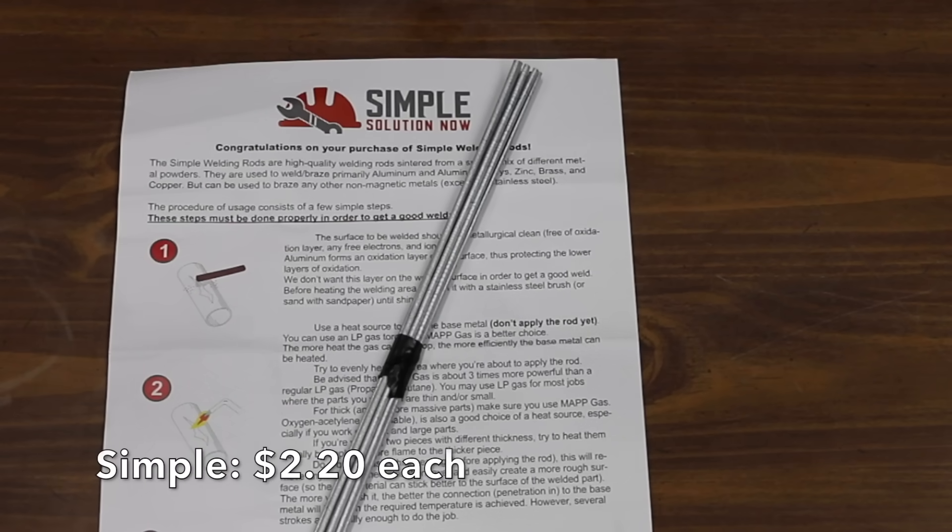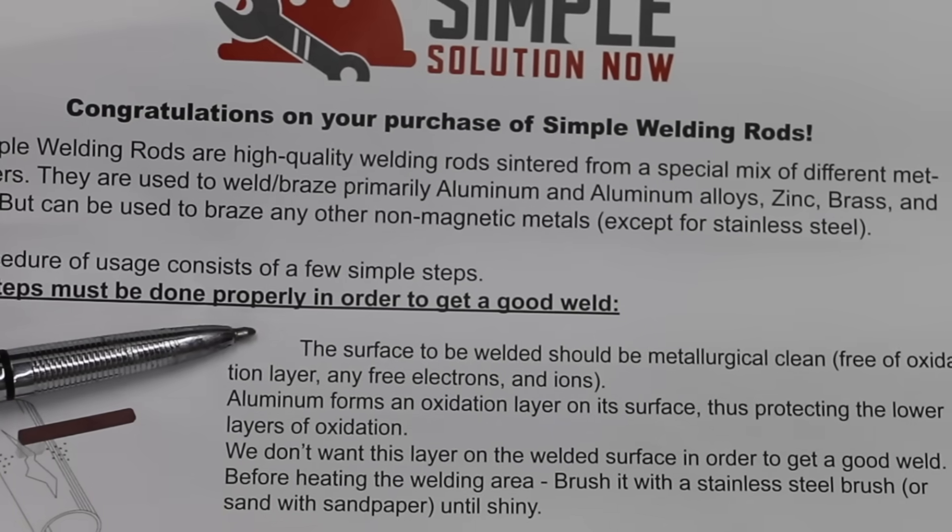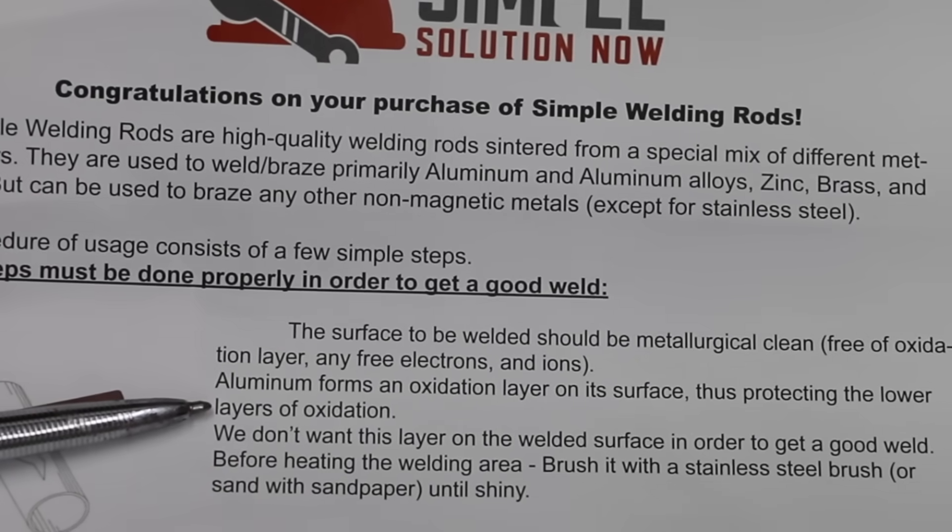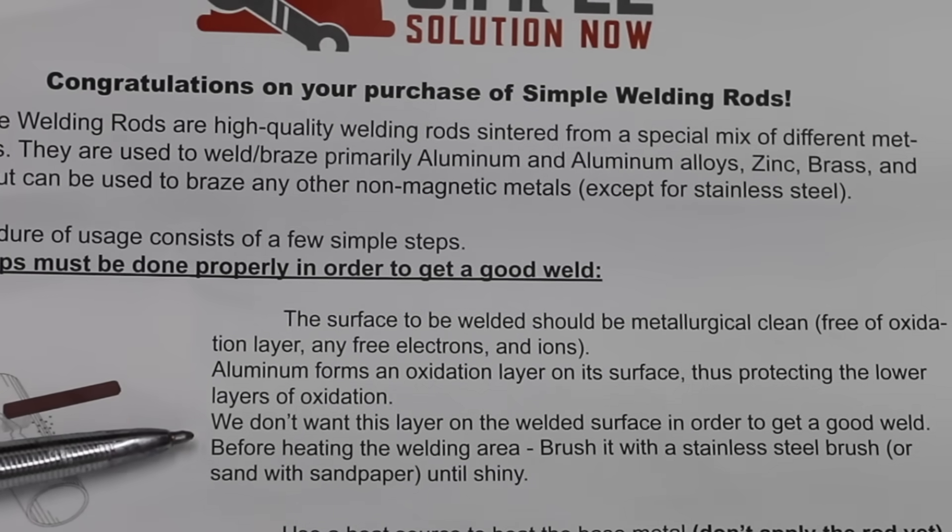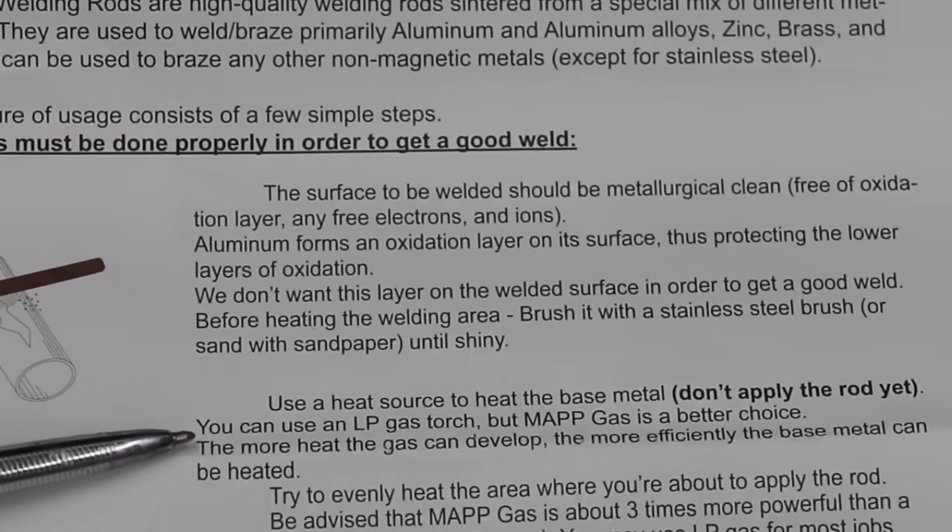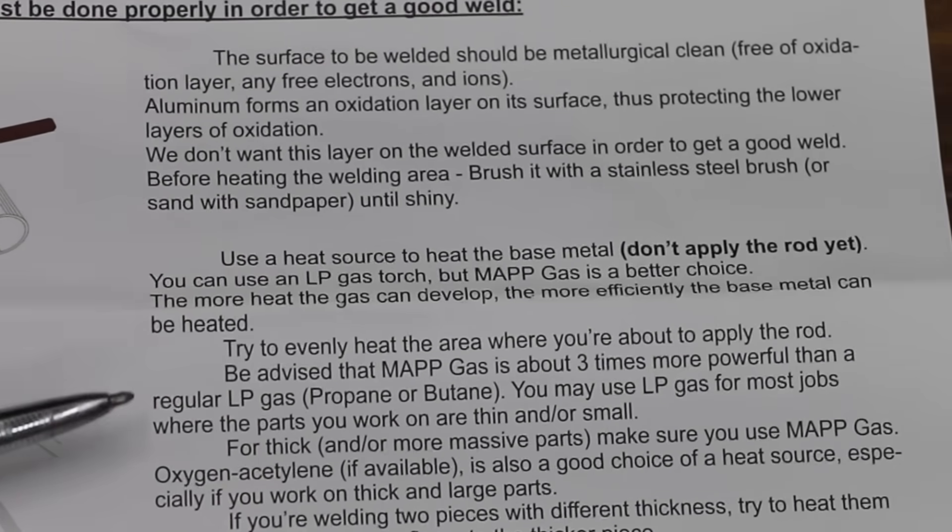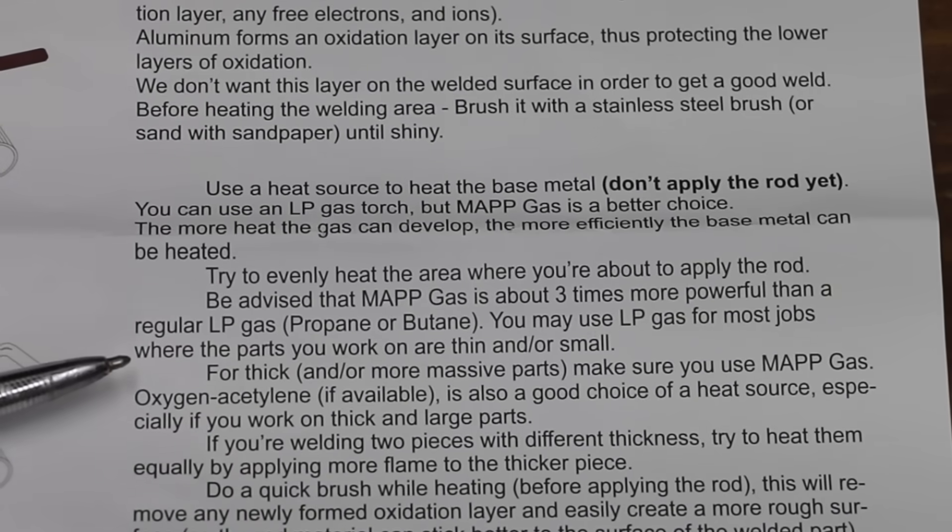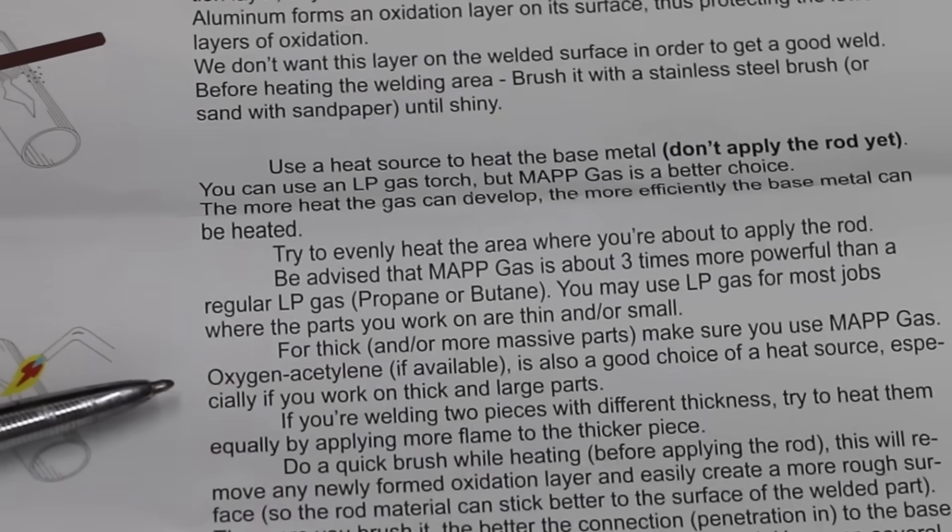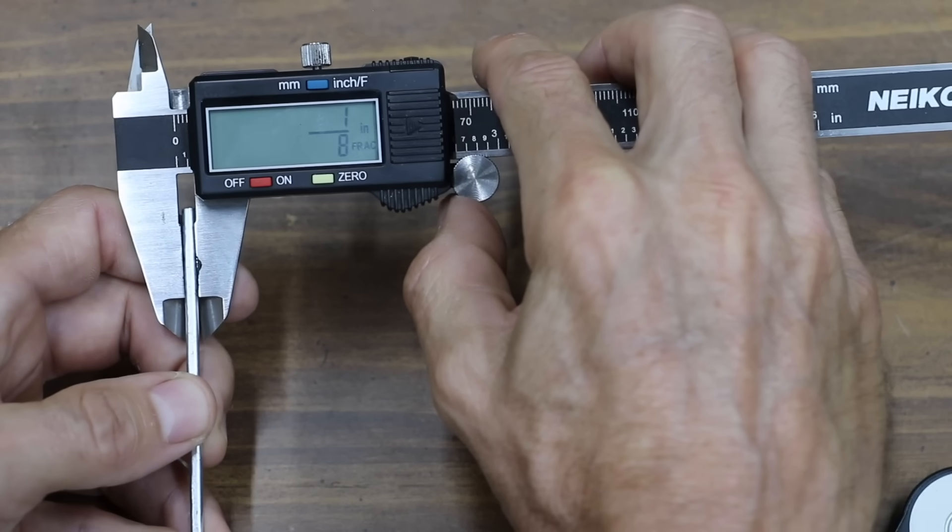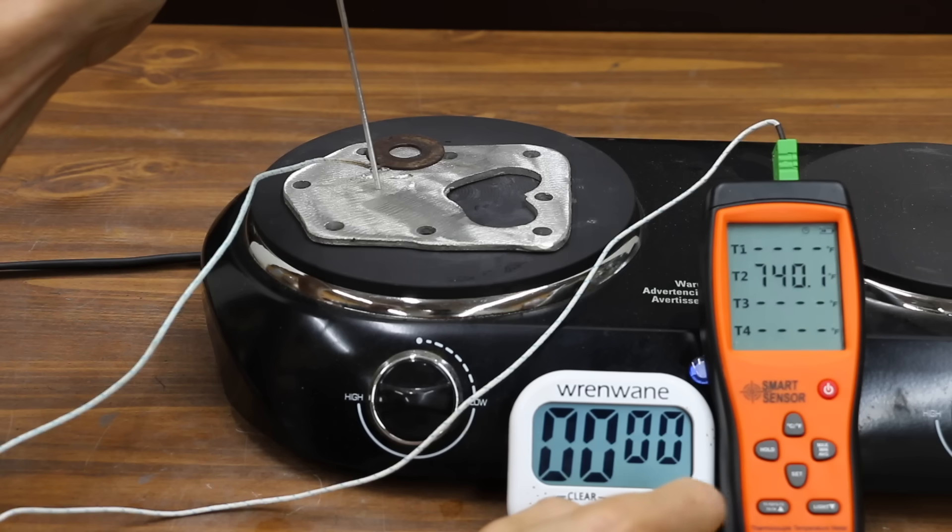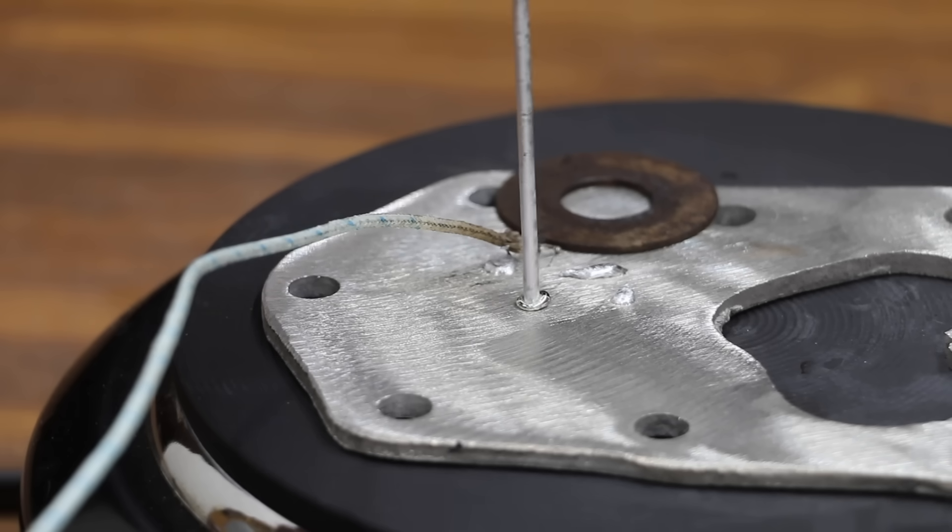At $21.95 for 10 welding rods, or $2.20 each, is this Simple Brand. The surface to be welded should be metallurgically clean. Aluminum forms an oxidation layer on its surface, thus protecting the lower layers from oxidation. Brush it with a stainless steel brush or sand with sandpaper until shiny. Use a heat source to heat the base metal. According to the instructions, you can use an LP gas torch, but MAP gas is a better choice. You can always use oxyacetylene as well. When the temperatures reach 728 degrees Fahrenheit, you can begin working. The Simple Brand is 1/8 inch. The most narrow part, 13/128. 12.34 grams. The Simple Brand melted in 10 seconds, just like the Blue Demon and the Burnz-O-Matic.